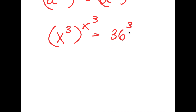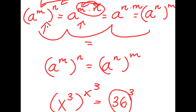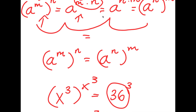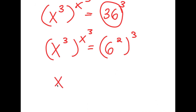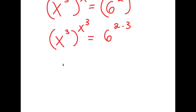Now from here, I'm going to rewrite 36 as 6 to the power of 2. So now I have x to the power of 3 to the power of x to the power of 3, is equal to 6 to the power of 2 to the power of 3. And again, if I have something in the form a to the power of m to the power of n, this is equal to a to the power of m times n. So this is the same thing as x to the power of 3 to the power of x to the power of 3, is equal to 6 to the power of 2 times 3. And 2 times 3 equals 6, so I have x to the power of 3 to the power of x to the power of 3, is equal to 6 to the power of 6.